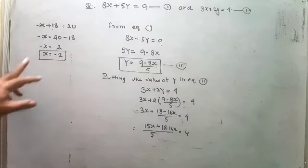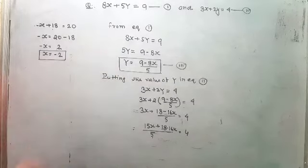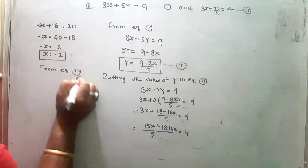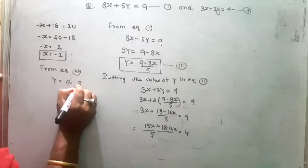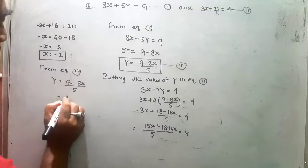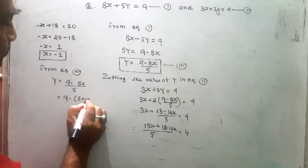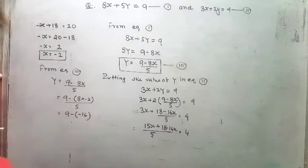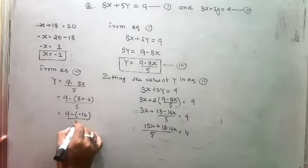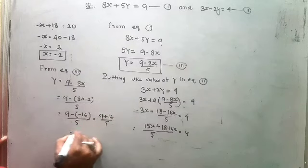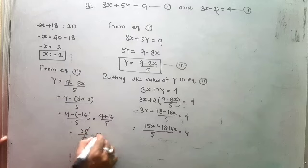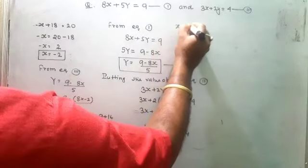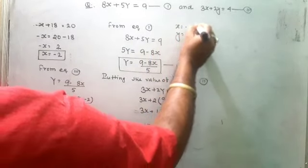Now to find y, use equation three: y is equal to 9 minus 8x by 5. Substituting x equals minus 2: y is equal to 9 minus 8 times minus 2, all by 5. That is 9 minus minus 16 by 5, which is 9 plus 16 by 5, giving 25 by 5. So y is equal to 5. Therefore x is equal to minus 2 and y is equal to 5.